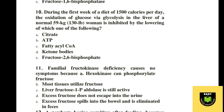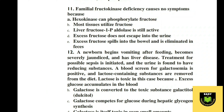Question 10. During the first week of a diet of 150 calories per day, the oxidation of glucose via glycolysis in the liver of a normal 59 kg individual is inhibited by lowering which of the following? A citrate, B ATP, C fatty acyl-CoA, D ketone bodies, E fructose-2,6-bisphosphate. The correct option is E, fructose-2,6-bisphosphate.